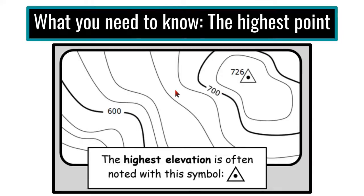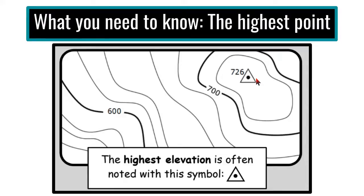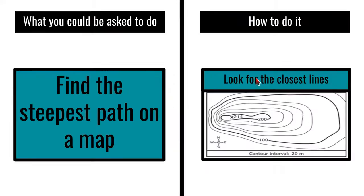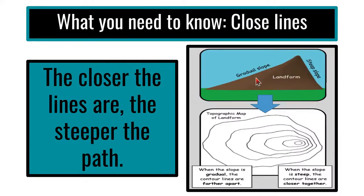There's an easy way to figure out the contour interval. Sometimes there are four lines between index contours, sometimes five. The index contours count by 100, and there are five contour lines to get to the next one, so 100 divided by 5 equals 20 — that's the interval. So if the index is 700 and it counts by 20s, the next line is 720, then 740. This peak is less than 740; it's actually 726.